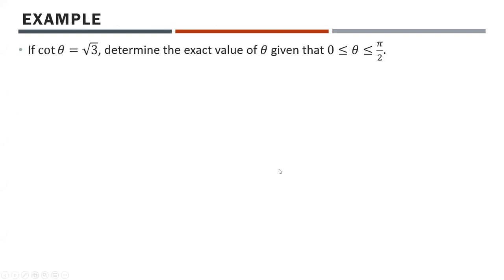First example: if cotangent theta equals root 3, determine the exact value of theta given that 0 is less than or equal to theta, which is less than or equal to pi over 2. Right off the bat, I see in my domain that we have to deal with radians. Like I was just mentioning, it's easiest if you just deal with degrees first and then convert to radians. Before we start, you might want to check that you are in fact in degree mode, because that will be the mode we'll need for at least 90% of today.